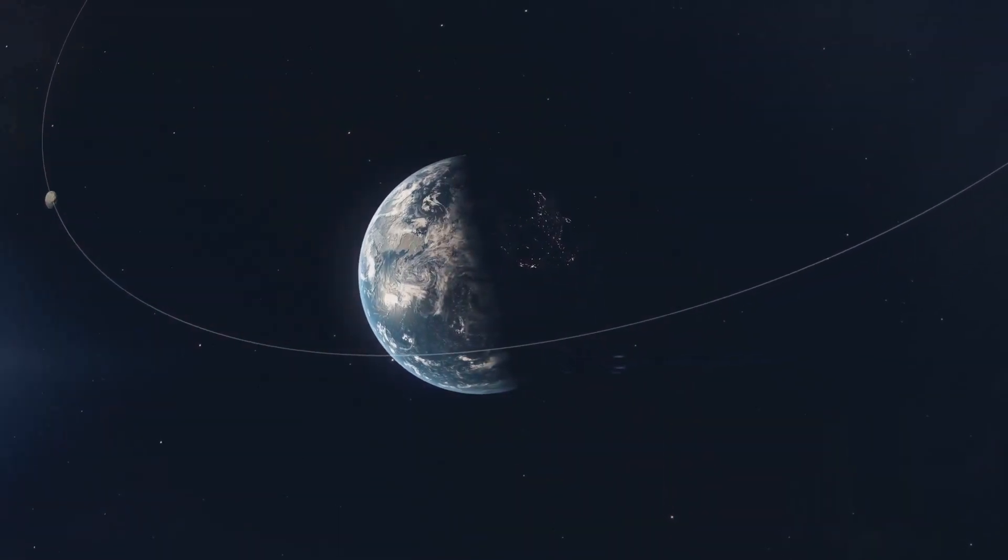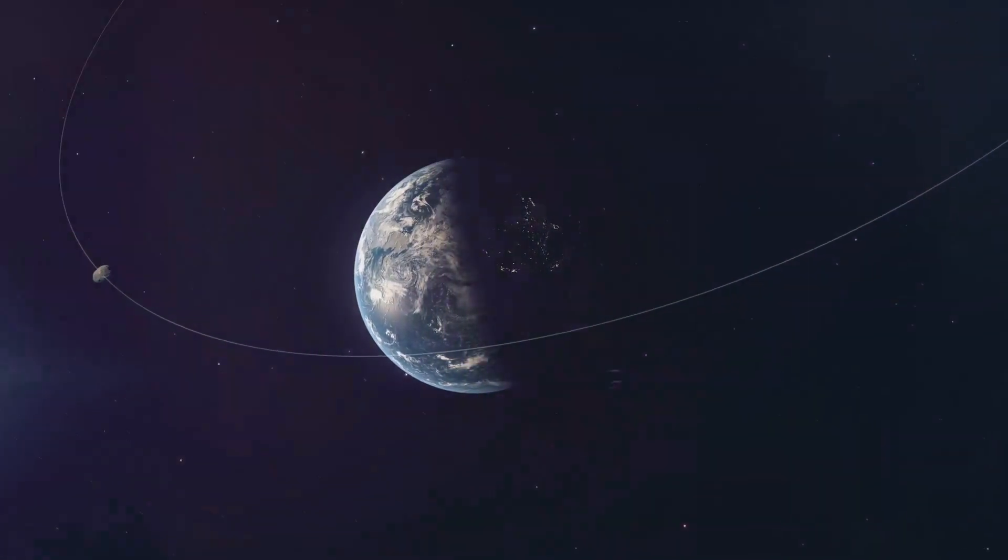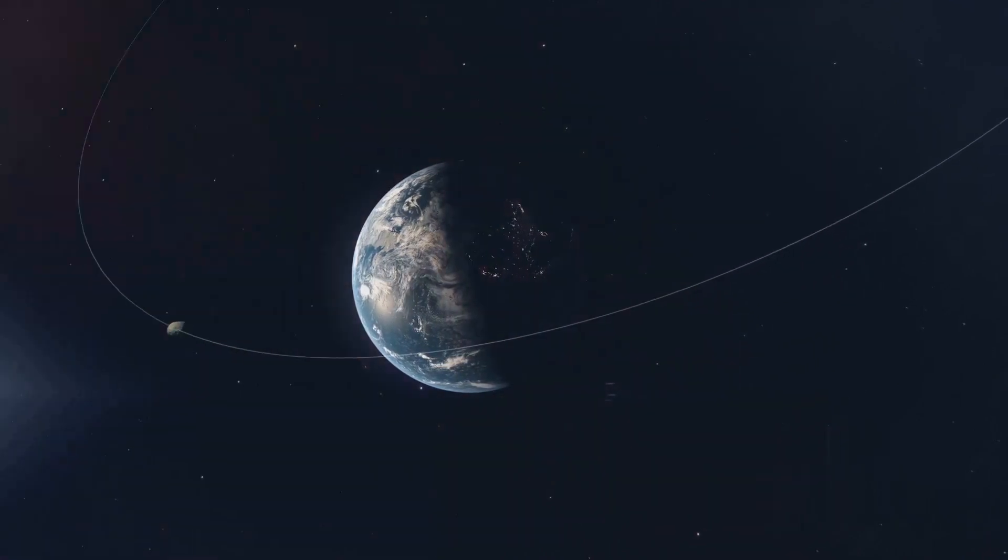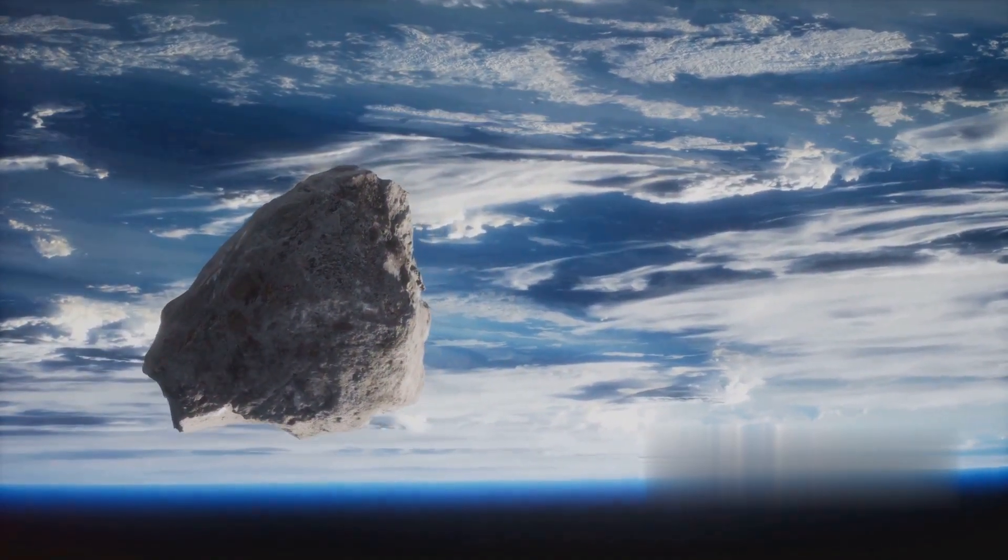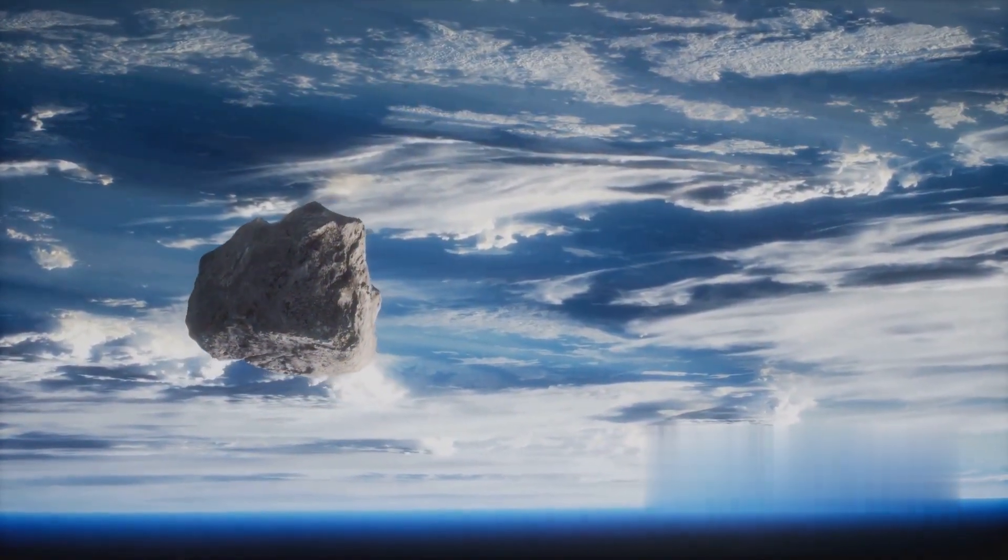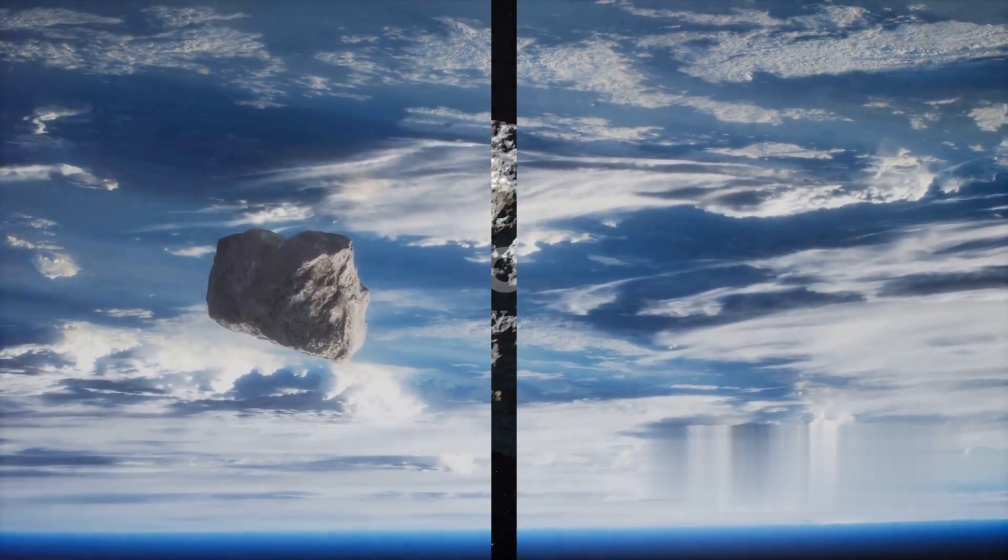While 2024 FG posed no immediate threat, observing its trajectory and tracking its path helped in refining its orbital parameters. This data is instrumental in predicting future paths of the asteroid and ruling out any potential impacts with Earth.